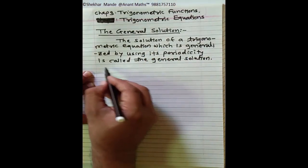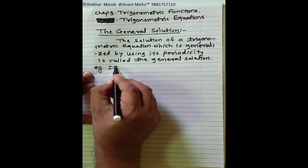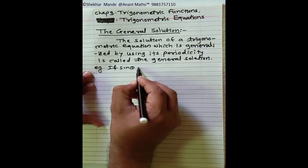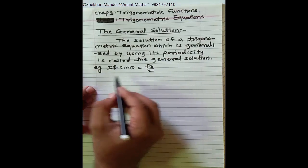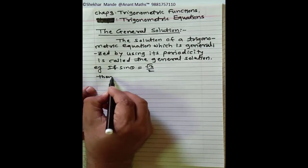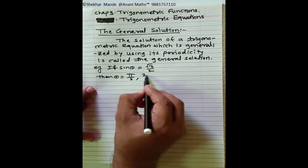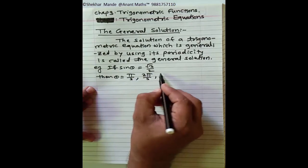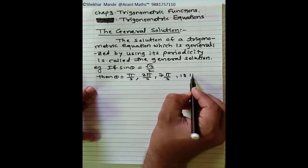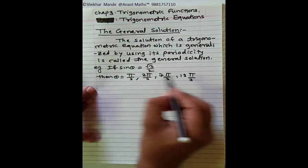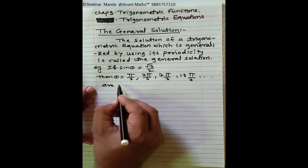Now let's take an example. If sin θ = √3/2, then this equation is satisfied by θ = π/3, 2π/3, 7π/3, 13π/3 and so on. These are the general solutions of this equation.